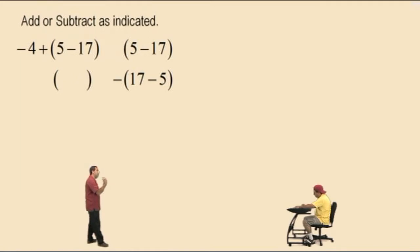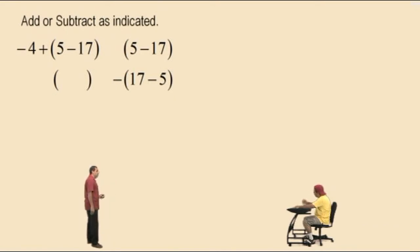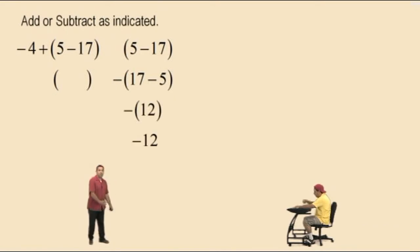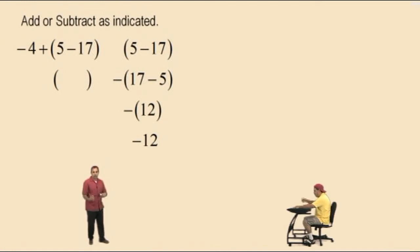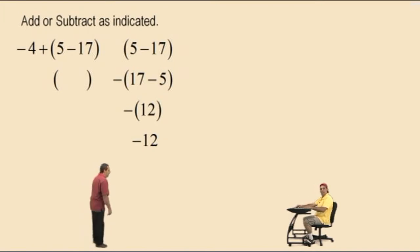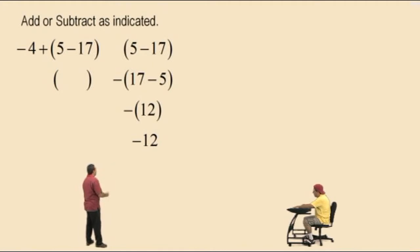I don't like doing 5 subtract 17, but I can do 17 subtract 5. If you do that, you've got to multiply by negative 1, or find its opposite. So 17 subtract 5 is — Charlie? 12. What's the opposite of 12? Negative 12. So if 17 subtract 5 was 12, then 5 subtract 17 was negative 12.